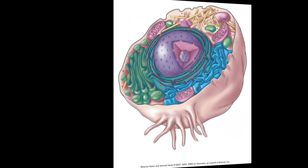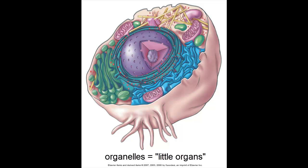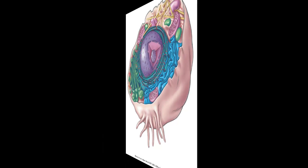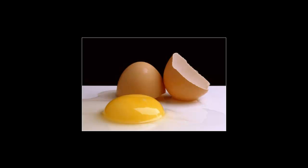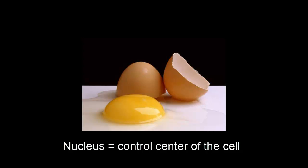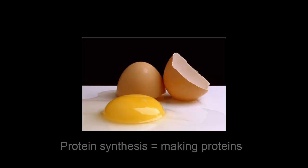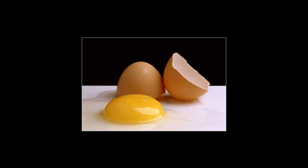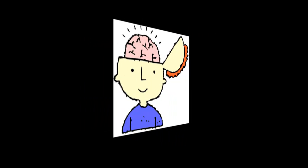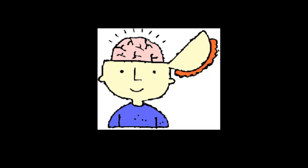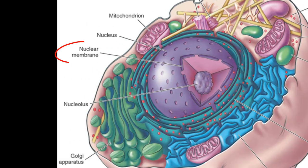Now we're going to go inside the cell. We have a bunch of organelles — which just means little organs — and we have the nucleus and the cytoplasm. If you think of the cell like an egg, the shell would be the cell membrane and the yolk would be like the nucleus. The nucleus is the control center of the cell — it contains all the genetic information and controls protein synthesis. Whatever the cell's function, that information is contained in the nucleus. The nucleus has its own membrane around it, called the nuclear membrane.